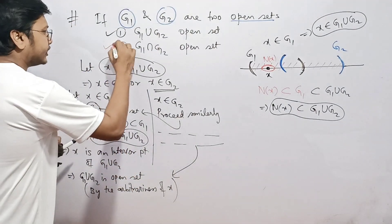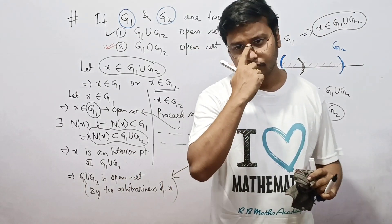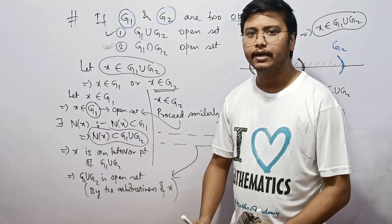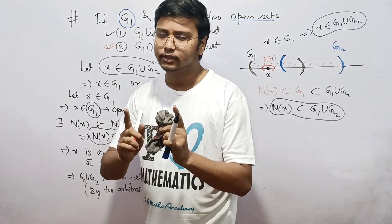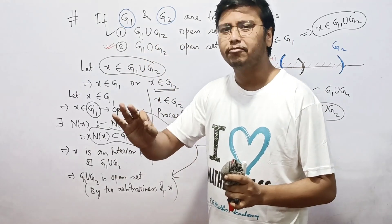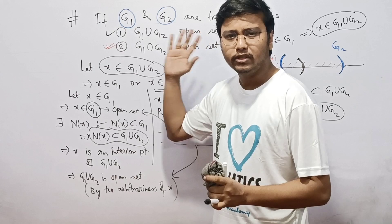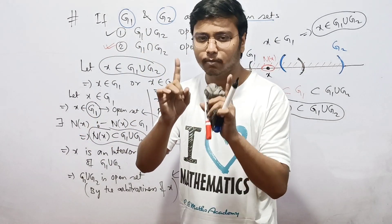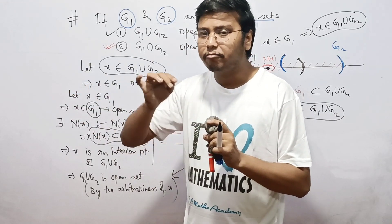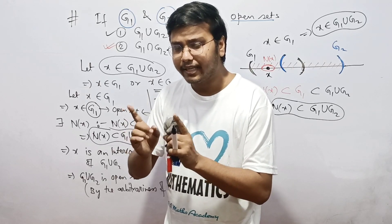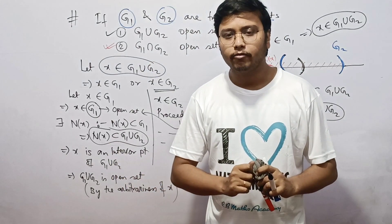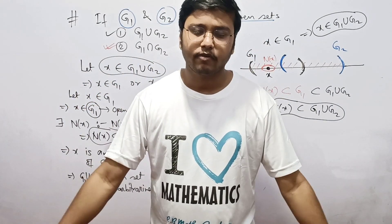The proof for the intersection of two open sets I'm going to leave to you — go through it in your books. I'll make a video on it if needed. Also, consider these questions: if we take an arbitrary (finite or infinite) number of unions of open sets, is the result still open? And for intersections, which cases give an open set and which don't? Let me know in the comments whether you'd like a video on these topics. Thank you for watching — have a nice day!